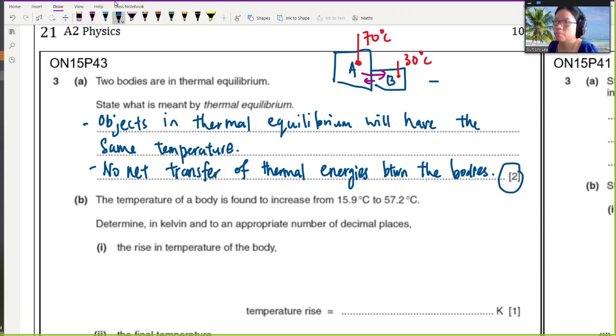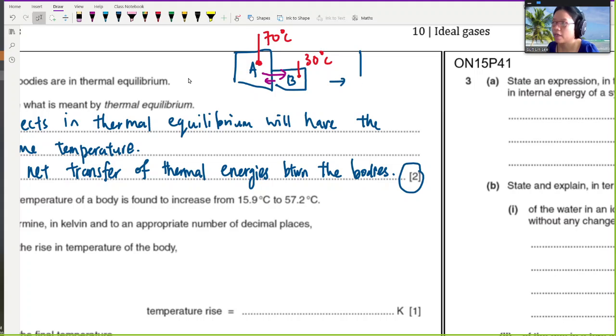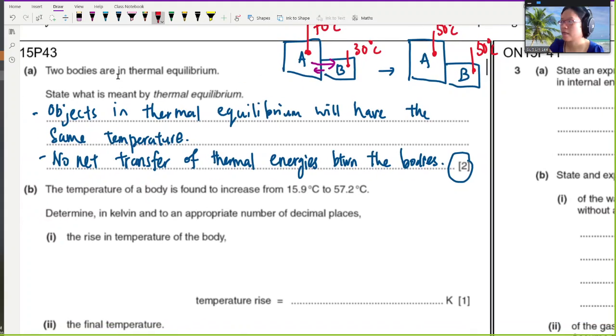So once they achieve thermal equilibrium, what will happen here is your block A and I don't know what the final temperature is. We need more information. But we definitely know that the equilibrium temperature will be between 70 and 30. So I don't know, let's say 50. So this is the first point. They have the same temperature. And the second point here is that it doesn't mean there's no heat flow. It just means that the net heat flow is zero. So there's no net transfer of thermal energy.